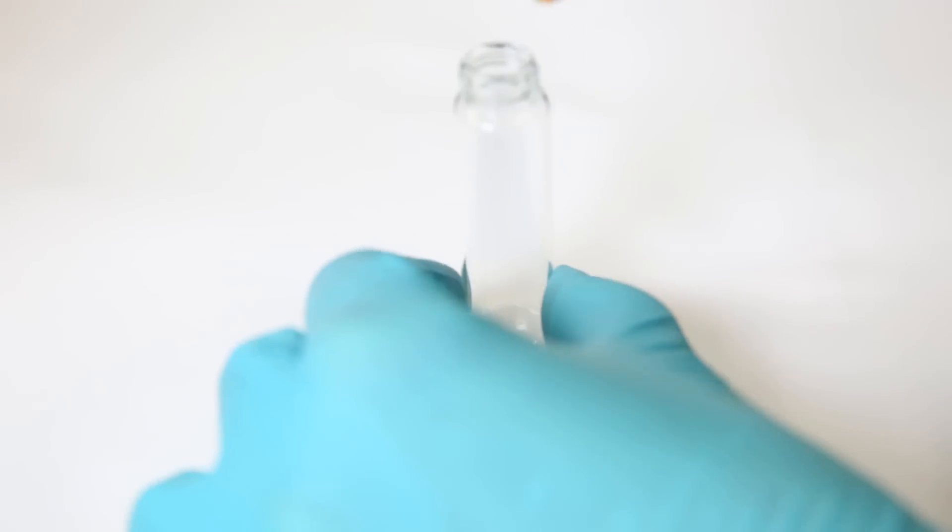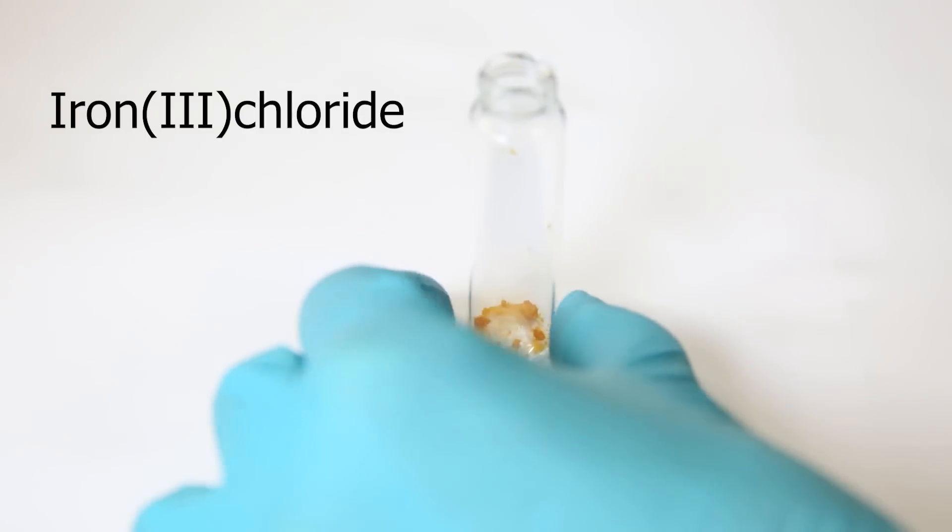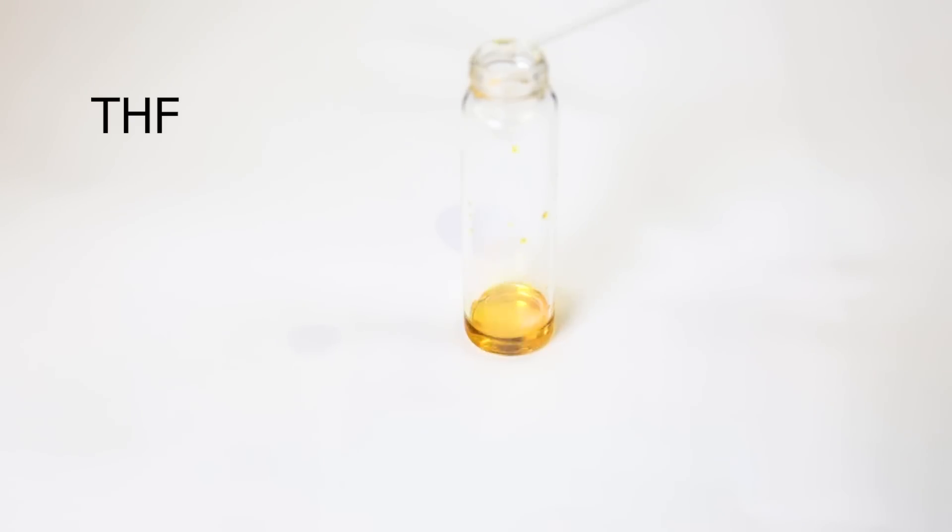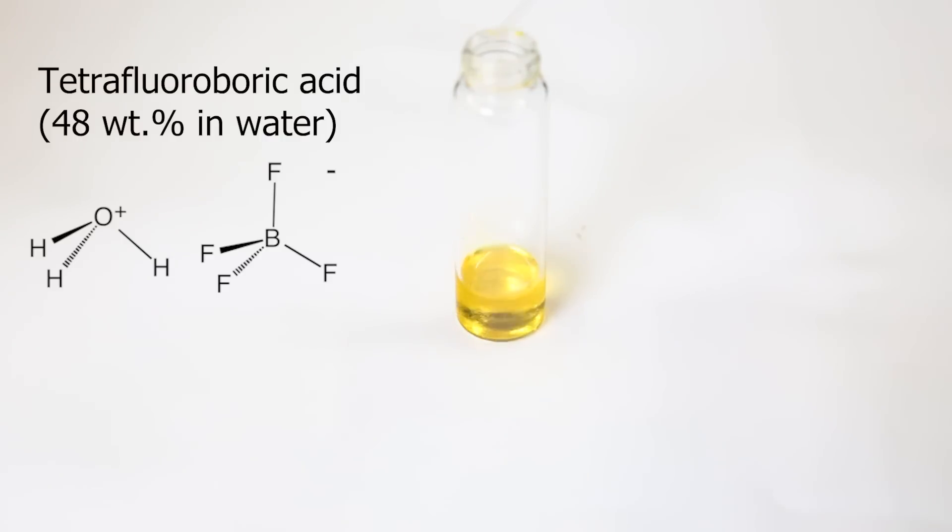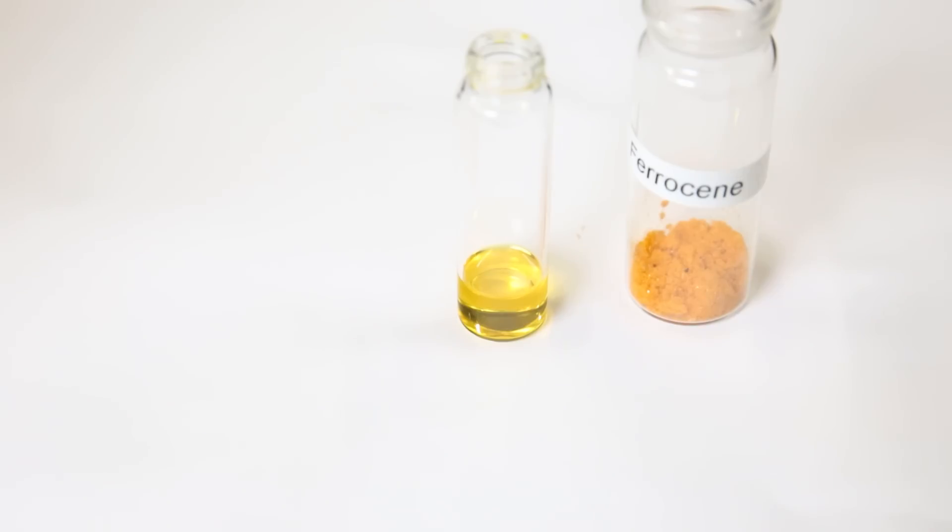So to a vial, I add a small amount of iron(III) chloride and dissolve it in some THF. Then to this solution, I add a bit of tetrafluoroboric acid. And as the final ingredient, the freshly made ferrocene.